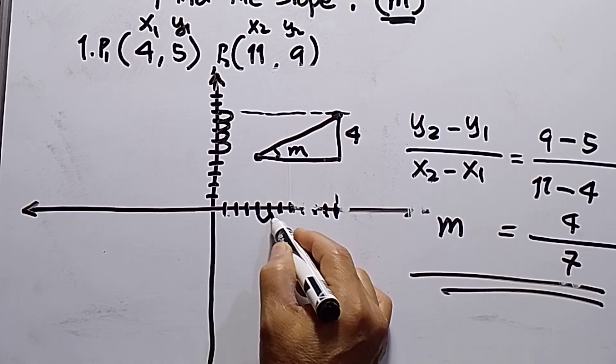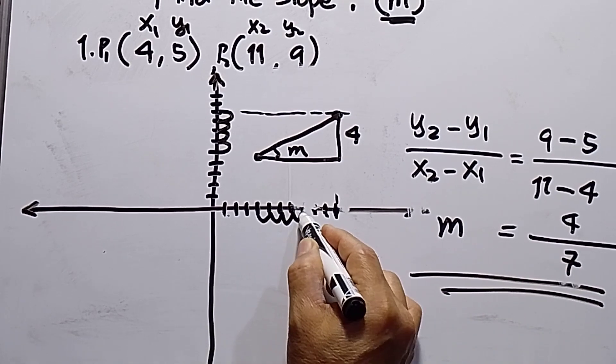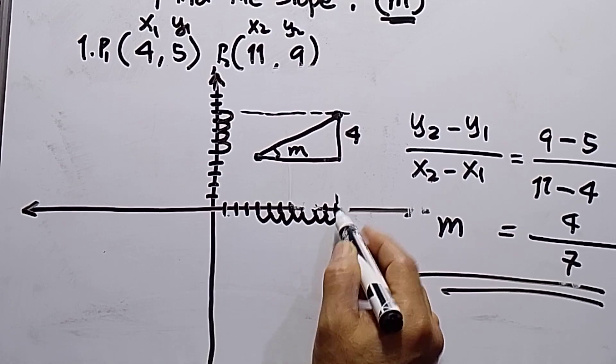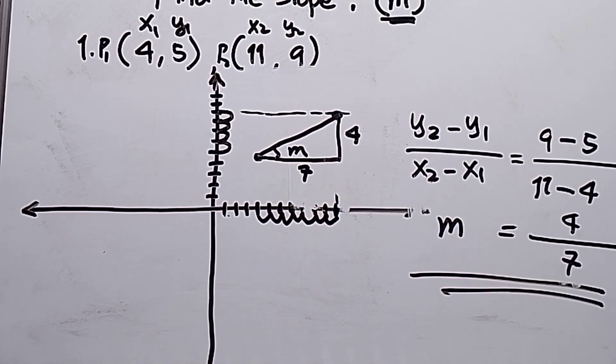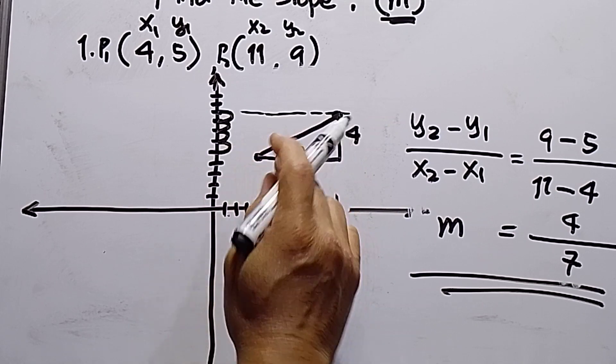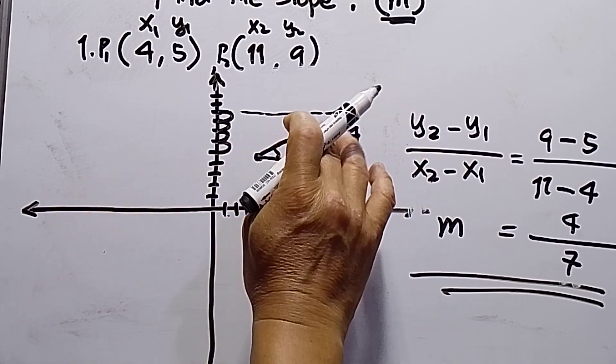this is also 7. Because the run is 7. Starting from here. 1, 2, 3, 4, 5, 6, 7. So this is correct. So the location of my slope is at the first quadrant.